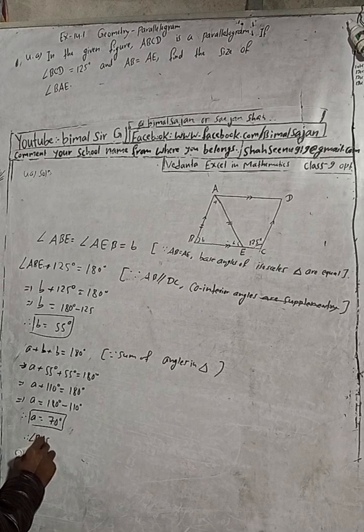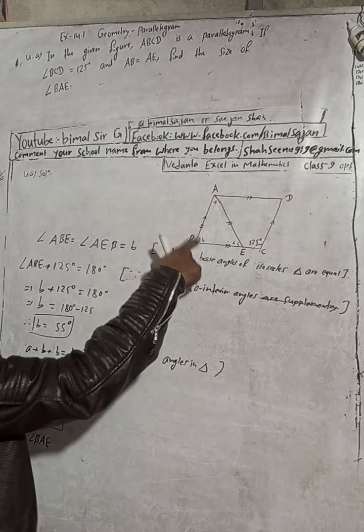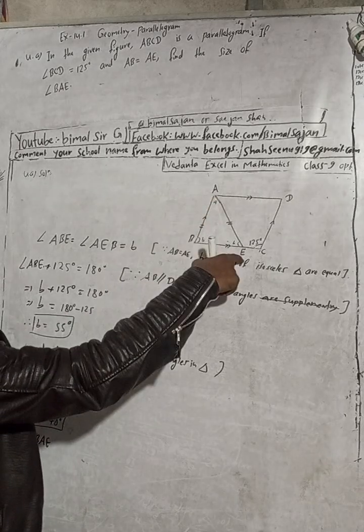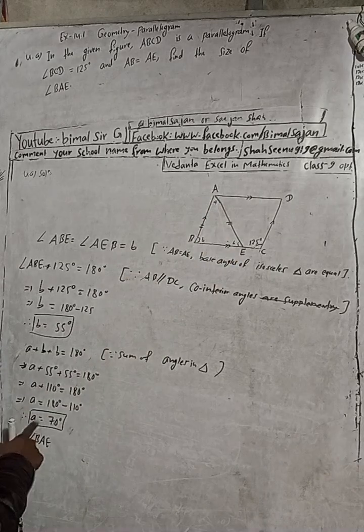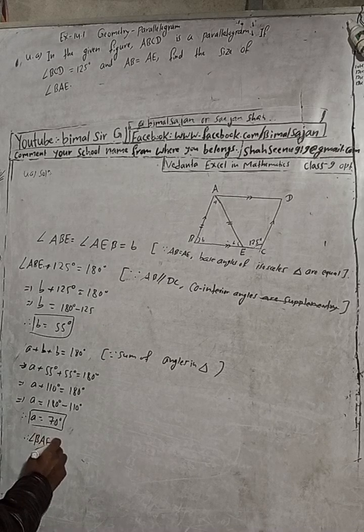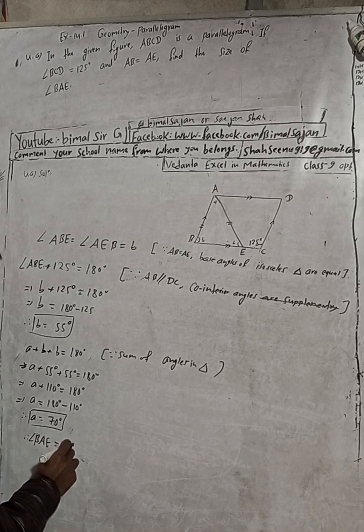Therefore A equals 70 degrees. We had supposed A as angle BAE, so angle BAE equals 70 degrees. This is our answer.